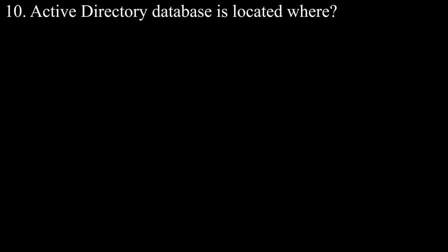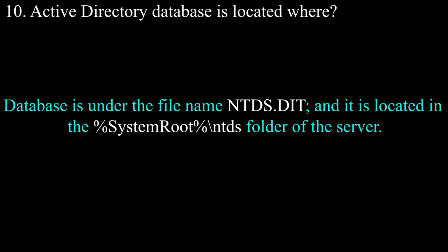Question number ten: where is the Active Directory database located? The database is under the file name ntds.dit and is located in the system root NTDS folder of the server.